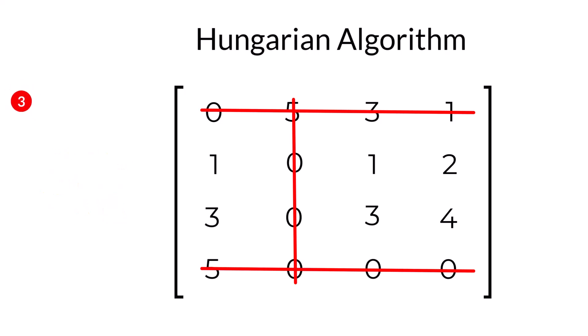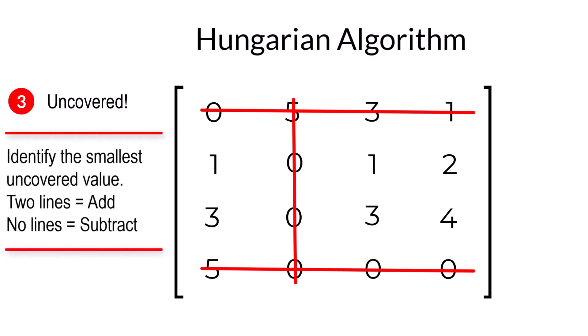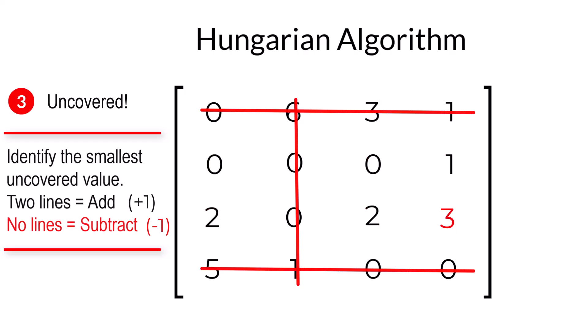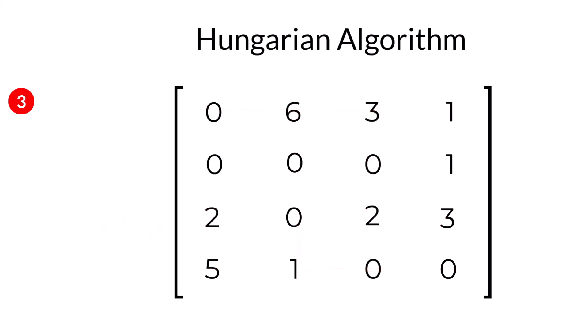In step three, we identify the smallest uncovered value. We add this quantity to any value that is crossed by two lines. And, we subtract that quantity from any value that is not covered by a line.